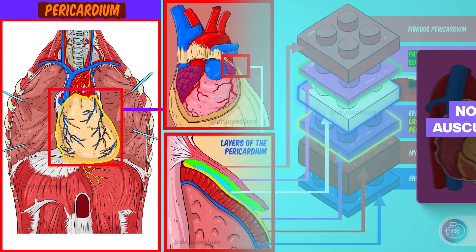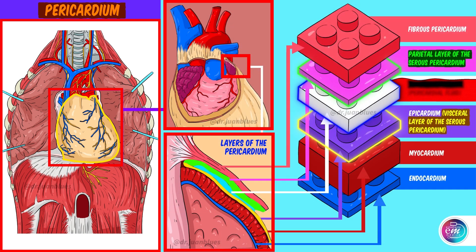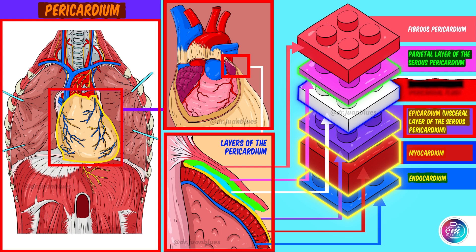Now that we've described the layers of the pericardium, let's look at the layers of the heart. We have the epicardium, the myocardium and the endocardium. The epicardium is the same as the visceral layer of the serous pericardium — that is to say, the heart shares a layer with the pericardium. The myocardium is the thick, contractile, muscular wall of the heart. And finally, the endocardium is a thin layer that lines the interior of the chambers of the heart.